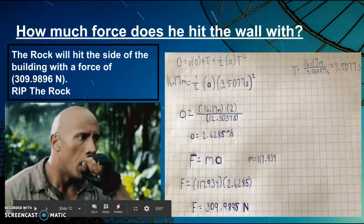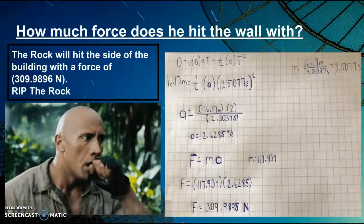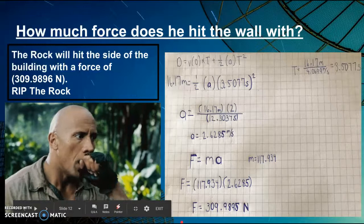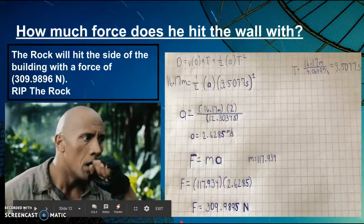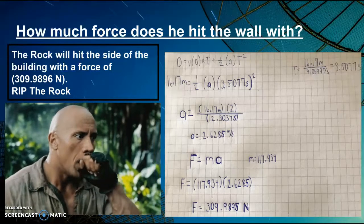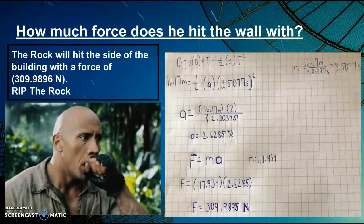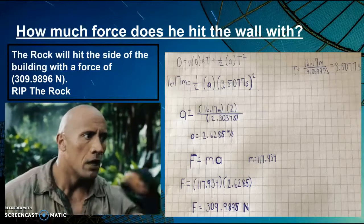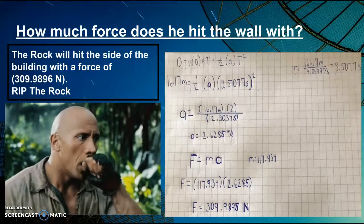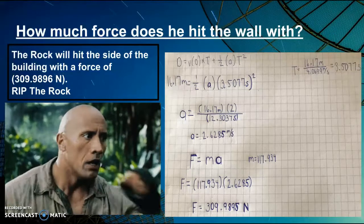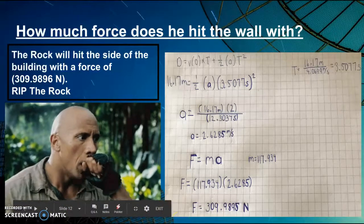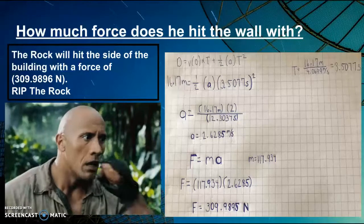To find the force, we began by using the distance equation to solve for accelerations since it's needed for our force equation. First, we assumed initial velocity was zero. We then solved for time by dividing horizontal distance by horizontal velocity, which gives us 33.5077 seconds. With time, we rearranged our equation to find acceleration, which is 2.6285. Now, with this acceleration, we can put it into the F equals MA equation, where M is The Rock's weight. Once everything is completed, the force comes out to be 309.9895 newtons.